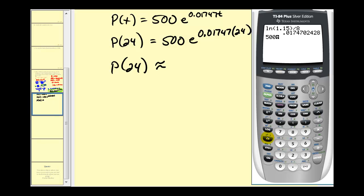We'll go back to the calculator one more time: 500 times e raised to the power of 0.01747 times 24. And so there will be approximately 760 bacteria after 24 hours or one day.